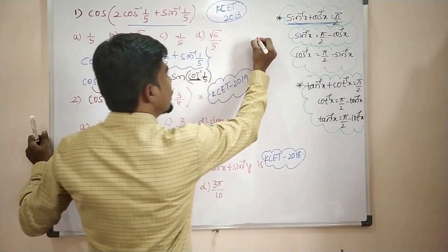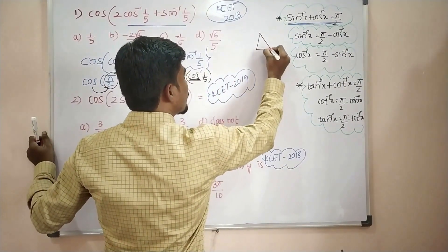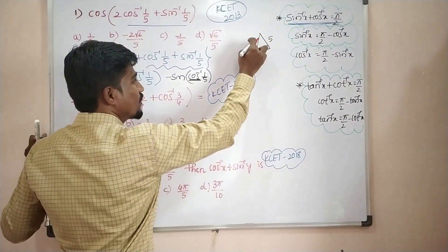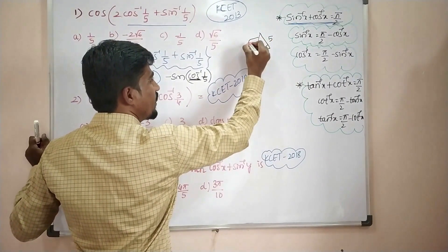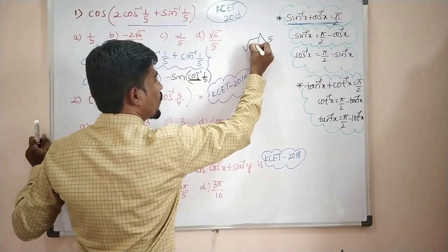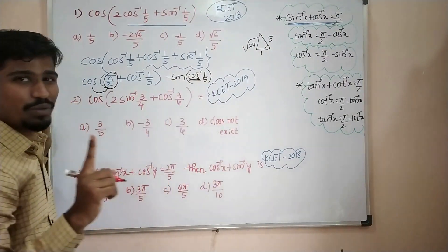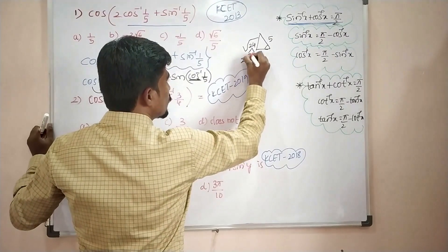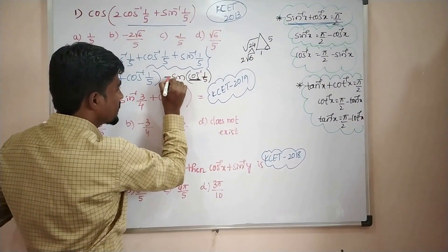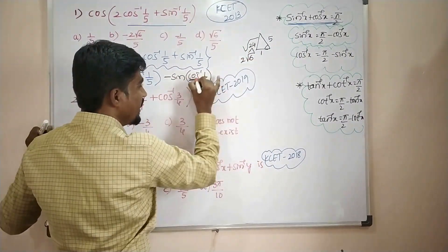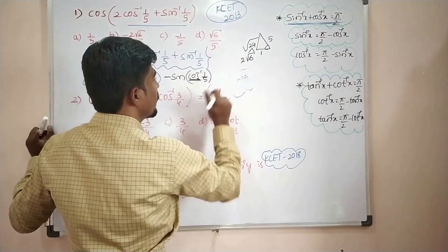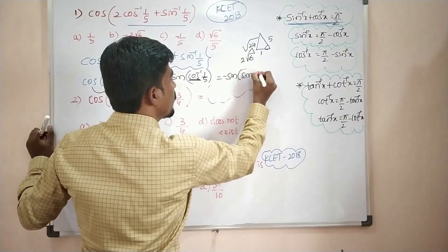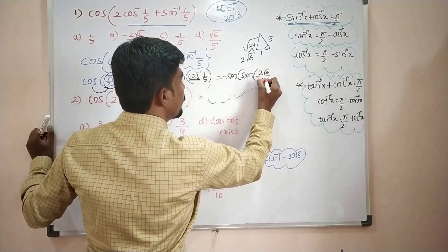sin of cos⁻¹(1/5): using a right angle triangle, if the hypotenuse is 5 and the adjacent is 1, the opposite side is √(25 − 1) = √24 = 2√6. So sin of cos⁻¹(1/5) = 2√6 / 5. Therefore the answer is minus 2√6 / 5.